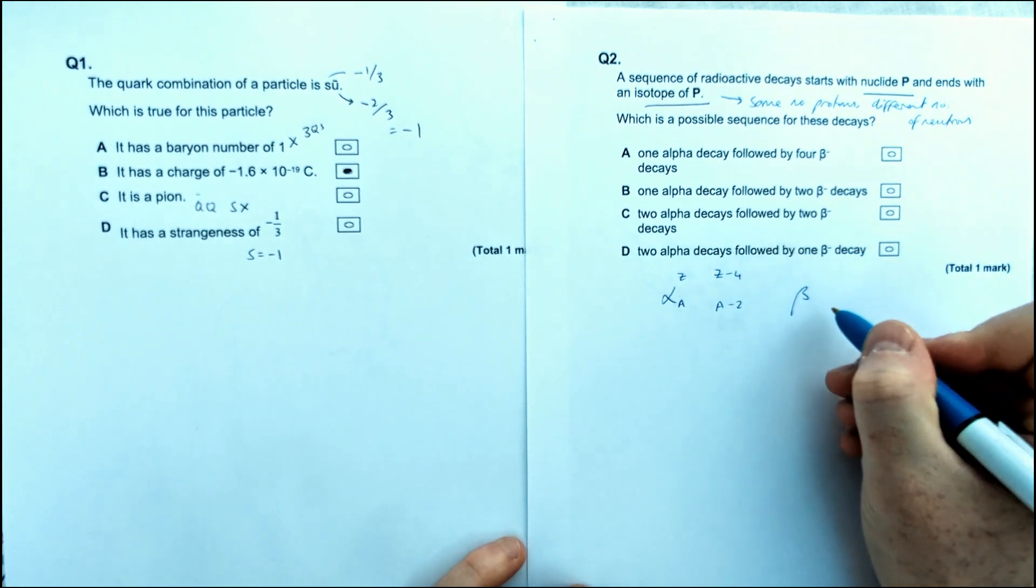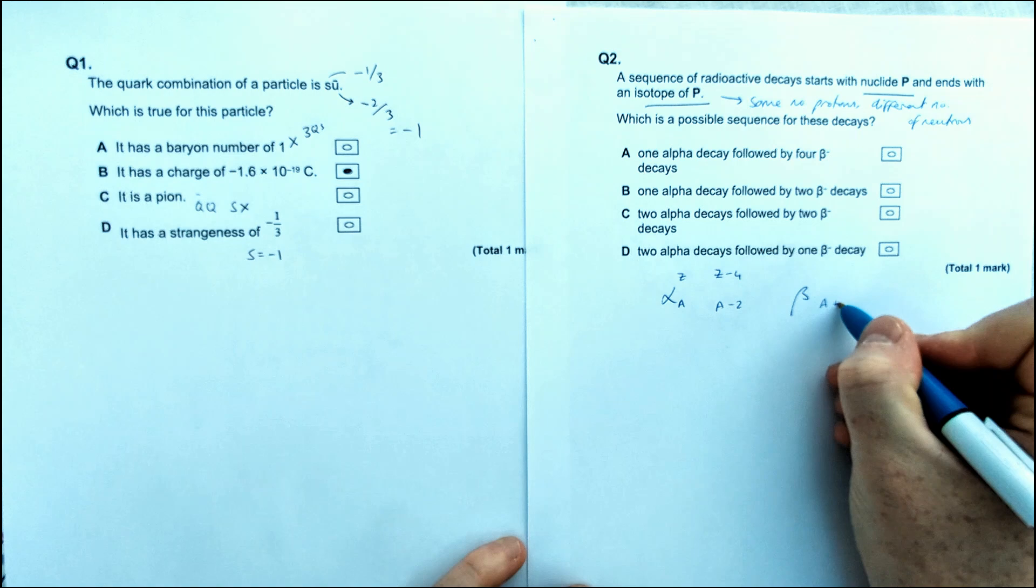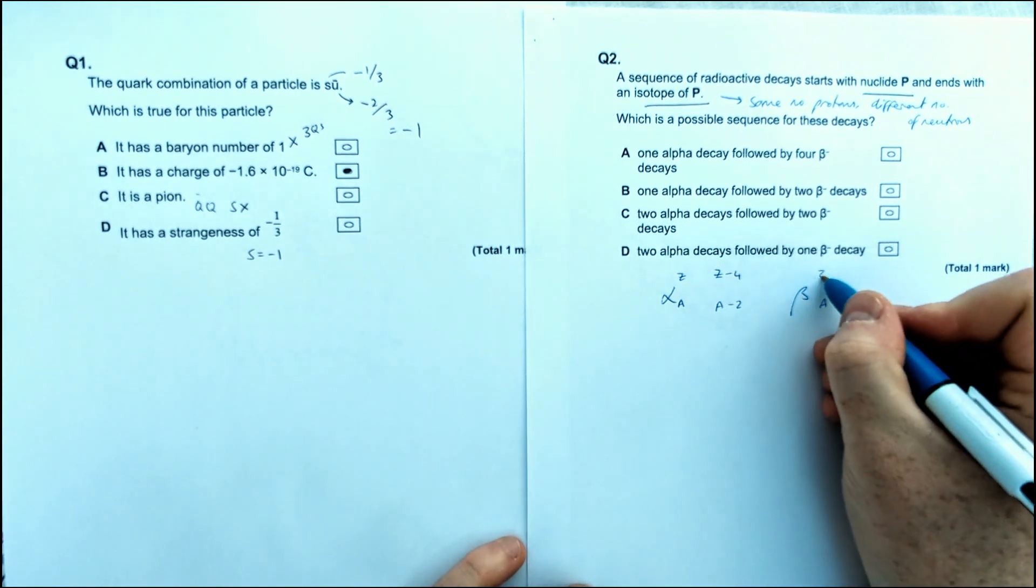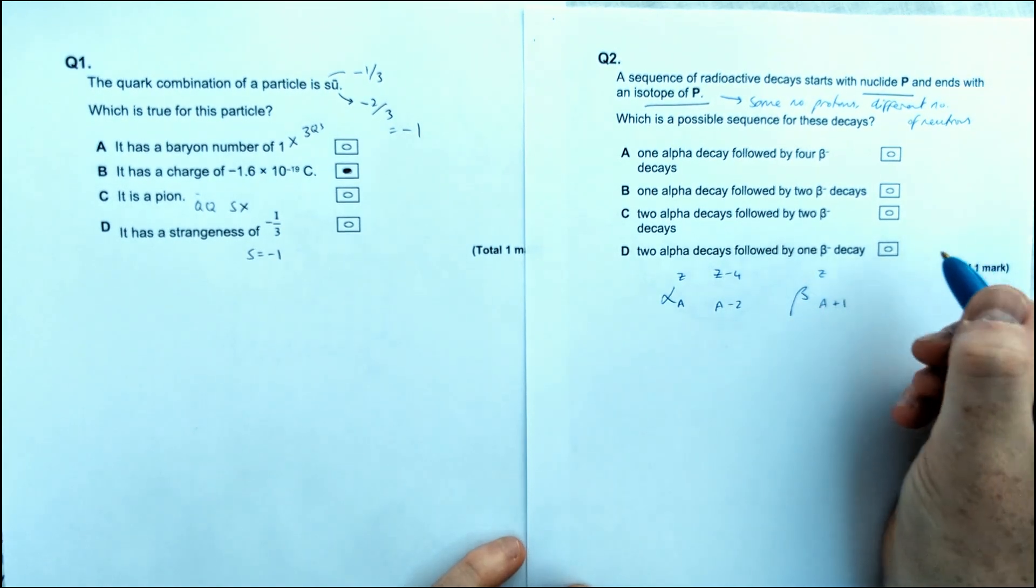And for beta particles, we're going to have A, it actually increases by 1 and Z is unchanged.